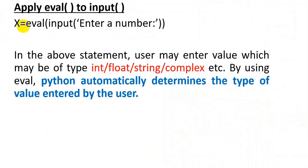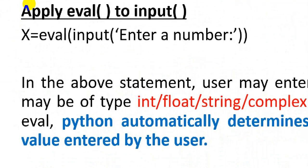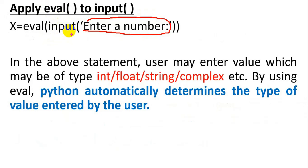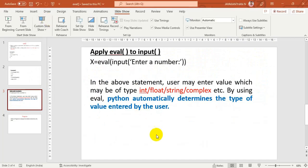Now let's see how to use eval() with the input() function. The input() function displays a statement on screen and whatever the user enters is returned as a string. When we pass input() inside eval(), eval will convert it into the appropriate data type. The user may enter an integer, float, string, or complex value, and Python automatically determines the type.